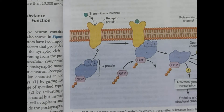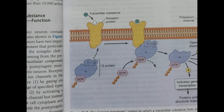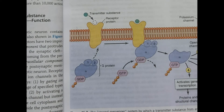Ion channels are fascinating because they do not transmit the same types of ions. They transmit various types: sodium ions (cations), potassium ions, calcium ions, and chloride ions (negatively charged anions). Importantly, every channel is not responsible for all types; specific ion channels responsible for conducting positively charged ions like sodium are known as cation channels.